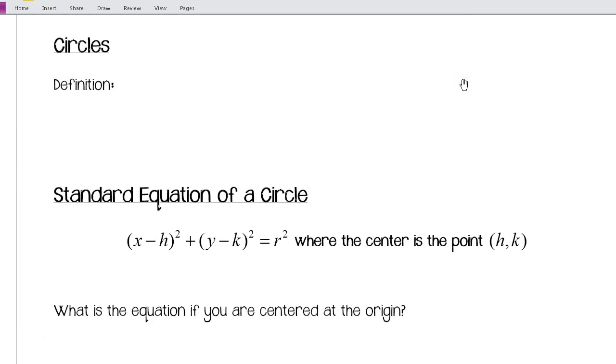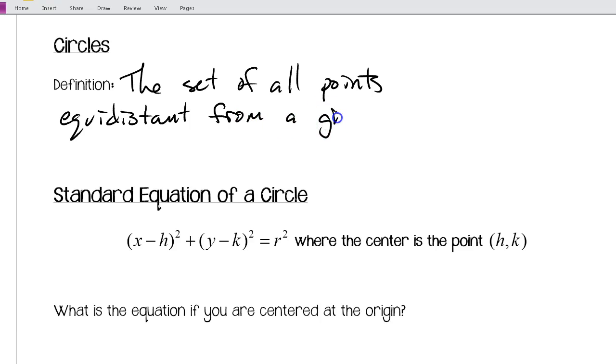So, our first conic section that we'll talk about, which you should have some experience with, is a circle. The definition of a circle is the set of all points equidistant from a given point. So, we start with a point. If I want all the other points that are the same distance from this one, it would actually form the circle.